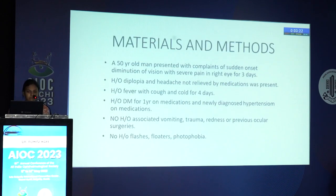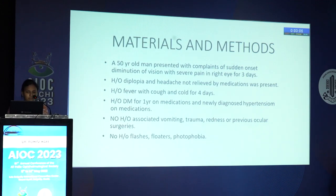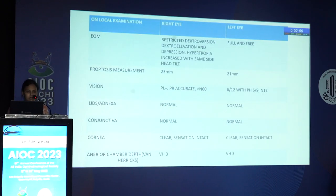We present a 50-year-old man who came with complaints of sudden onset diminution of vision with severe pain in the right eye for three days. He had a history of diplopia and headache not relieved by medication, and a history of fever with cough and cold for four days. He is a known diabetic for one year on medication and newly diagnosed hypertensive on medication. No associated vomiting, trauma, redness, or previous ocular surgery. No flashes or floaters.